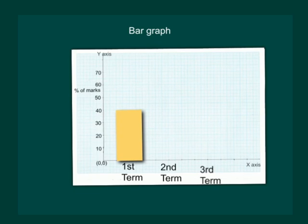He scored 50 percent in second term, so let us mark for the second term 50 percent and then we draw the bar graph. On drawing the bar, now our graph looks like this. It has got two bars and in the second term he has scored more marks, so the bar is taller.